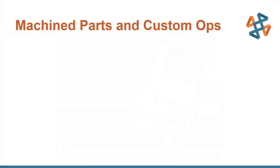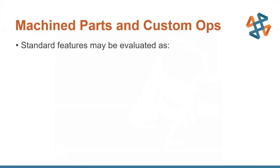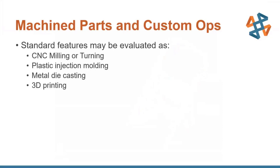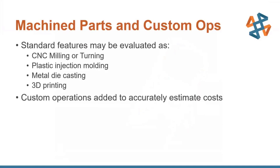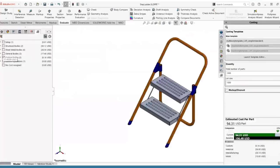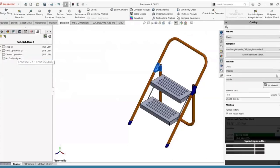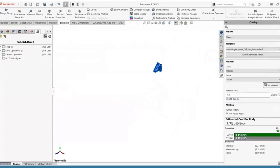Now let's look at our machined parts and custom operations. Standard features may be evaluated as CNC milled, turned, injection molded, die cast, or even 3D printed. We'll also see how we can apply custom operations to accurately estimate costs. I'll go into my general bodies, double-click, and compare: is this going to be better machined or molded? If you have experience with that, you'll know molding is much cheaper — but let's peek at what machining does.